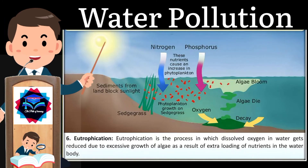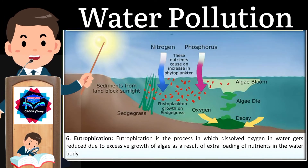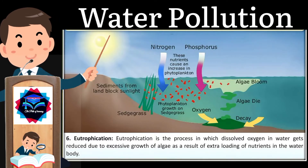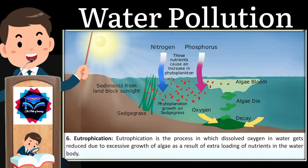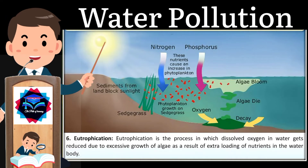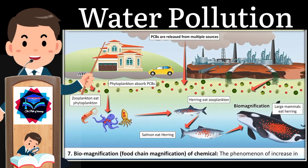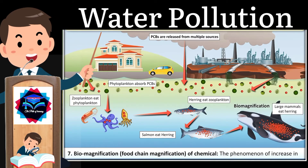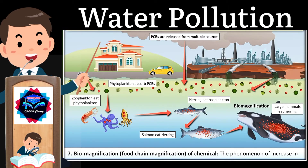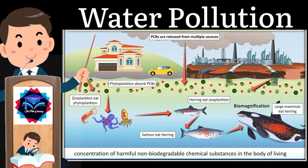Six, eutrophication — eutrophication is the process in which dissolved oxygen in water gets reduced due to excessive growth of algae as a result of extra loading of nutrients in the water body. Seven, biomagnification — the phenomenon of magnification of chemical substances in the bodies of living organisms at each trophic level of the food chain is called biomagnification.